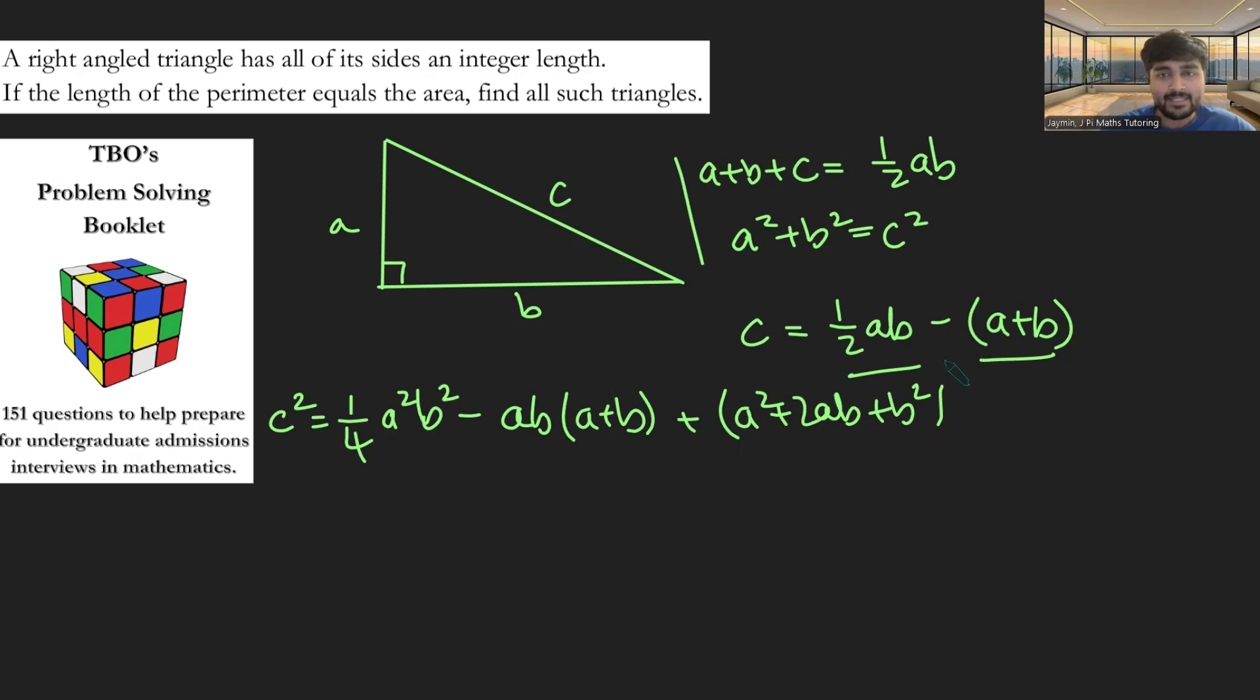Okay, amazing, I get this here, and using the fact that A squared plus B squared equals C squared, I can cancel that with that and that. That's quite nice.